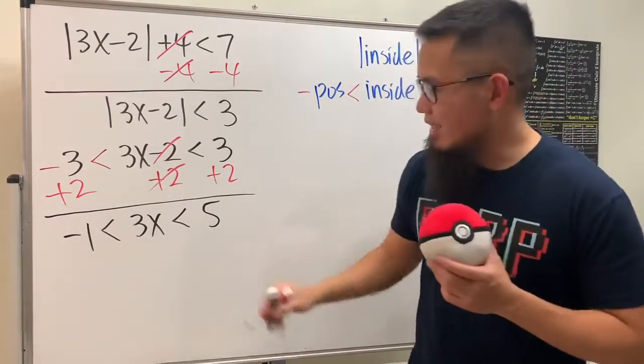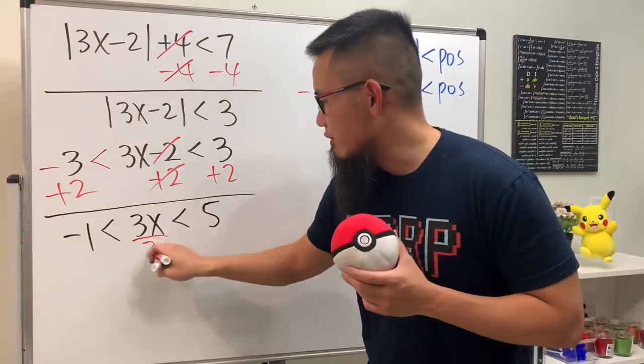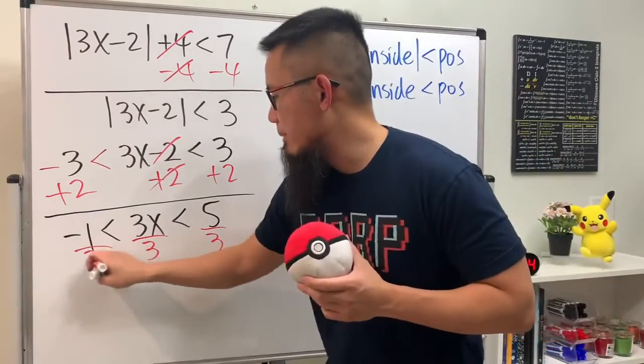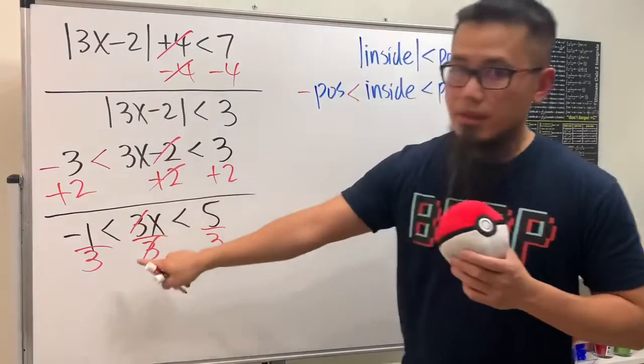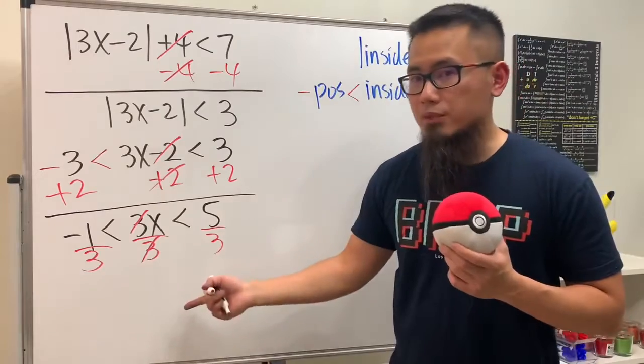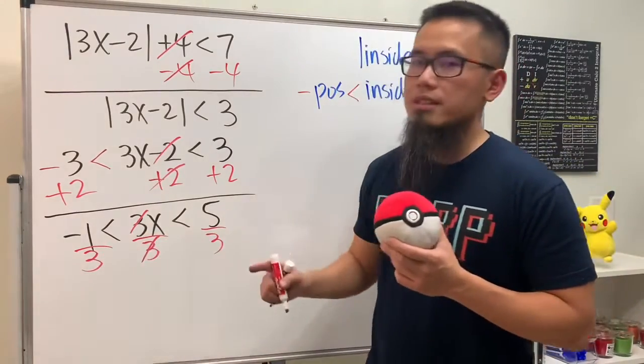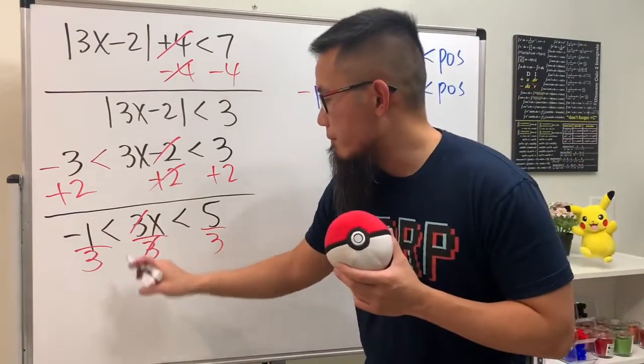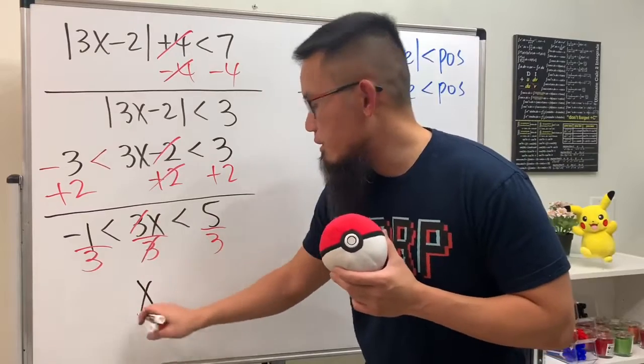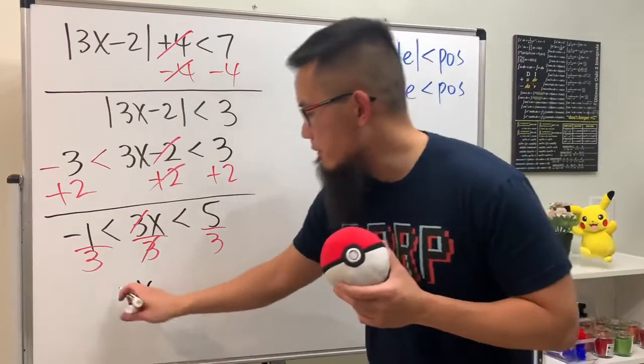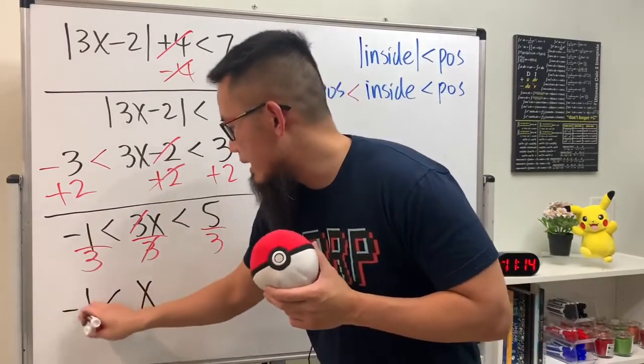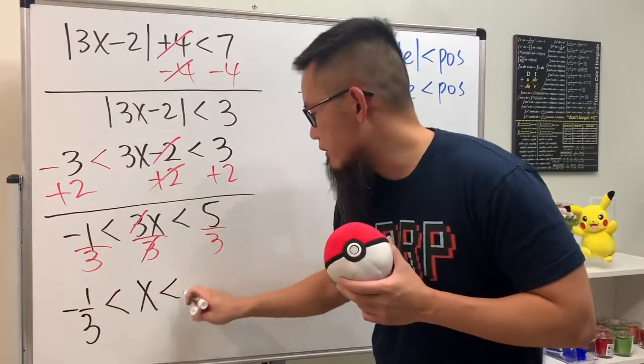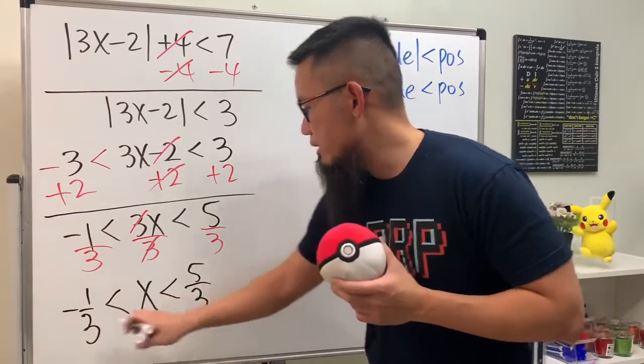One more step: we have 3 times x, so we have to divide by 3, divided by 3, and divided by 3. You see we're dividing by positive 3, so we do not flip the inequality symbol. Finally, we can see that x is in the middle, x is in between negative one-third and 5 over 3.